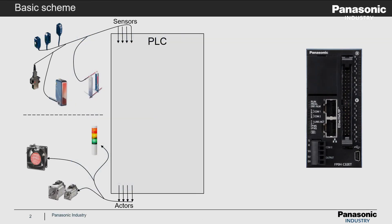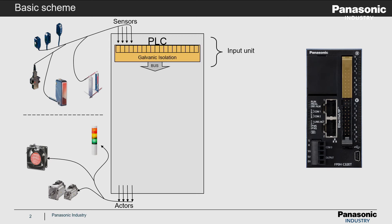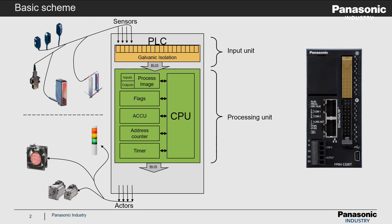The very basic scheme of a PLC is shown on the next PowerPoint slide. Some sensors are connected to the digital inputs, which are highlighted here with orange color. The green block represents the heart of a PLC, which includes the central processing unit called CPU, and the CPU is communicating with other important units to handle the PLC program correctly.